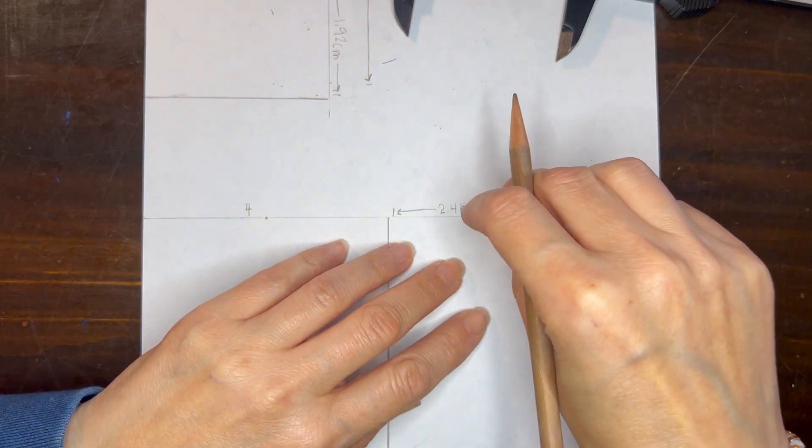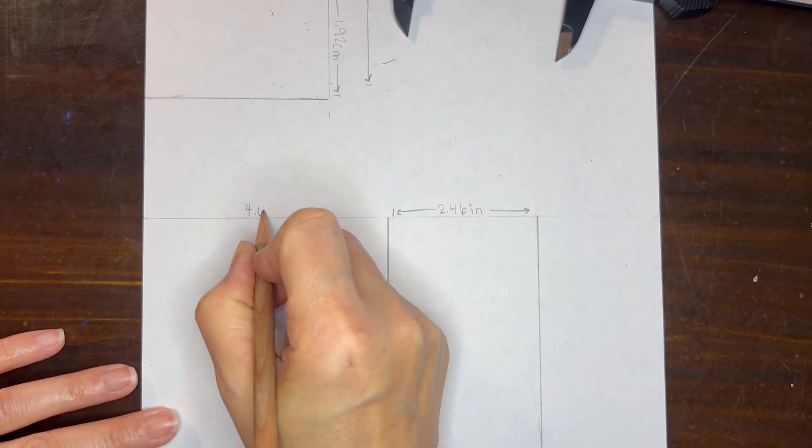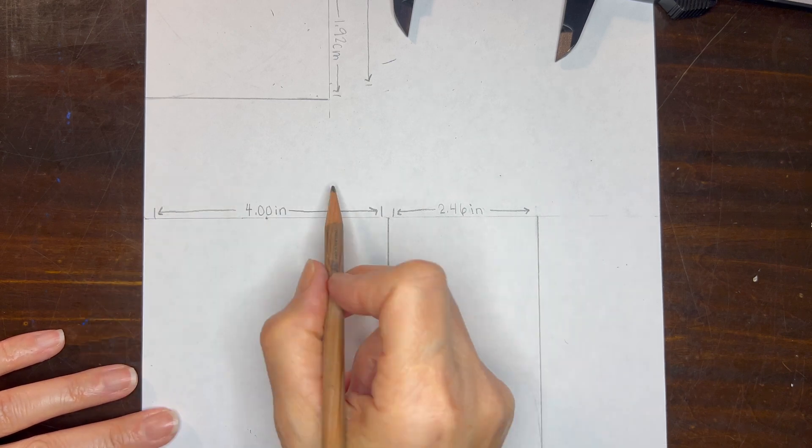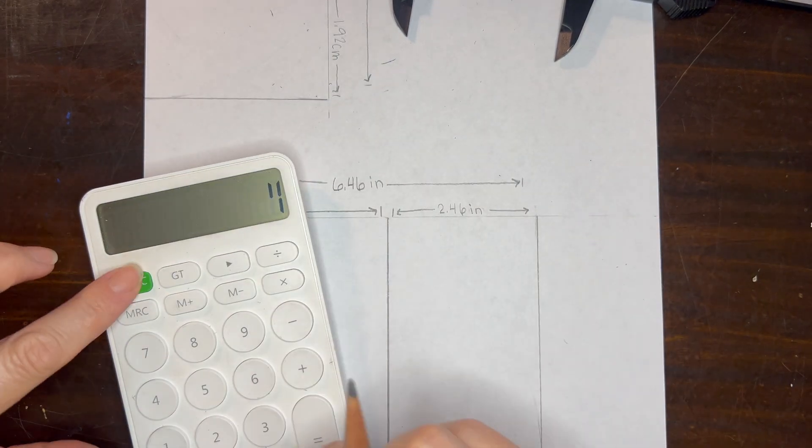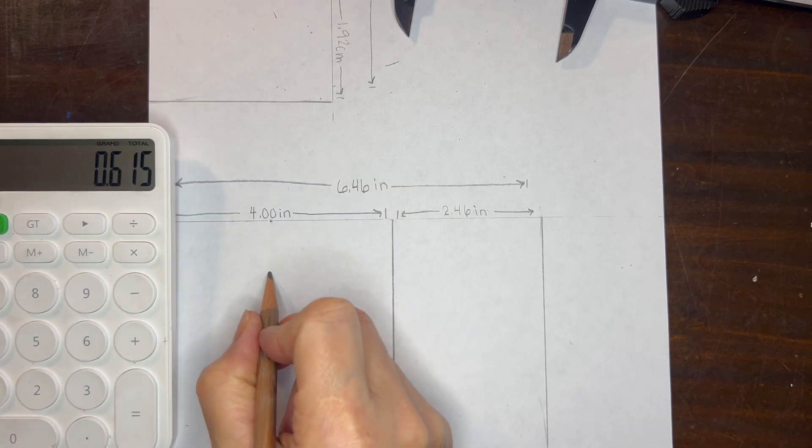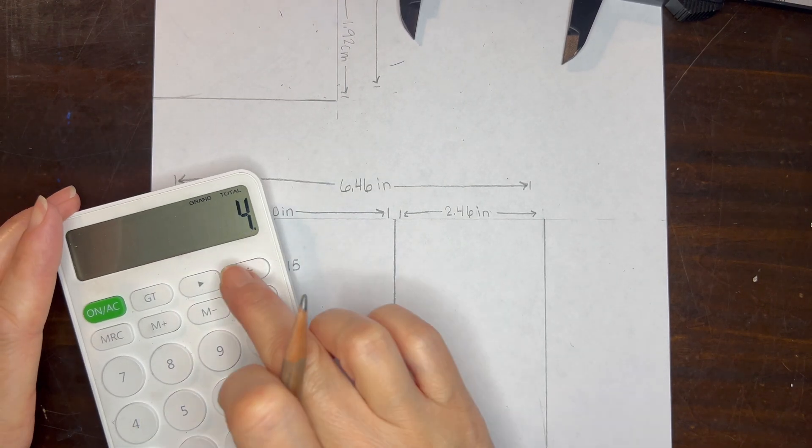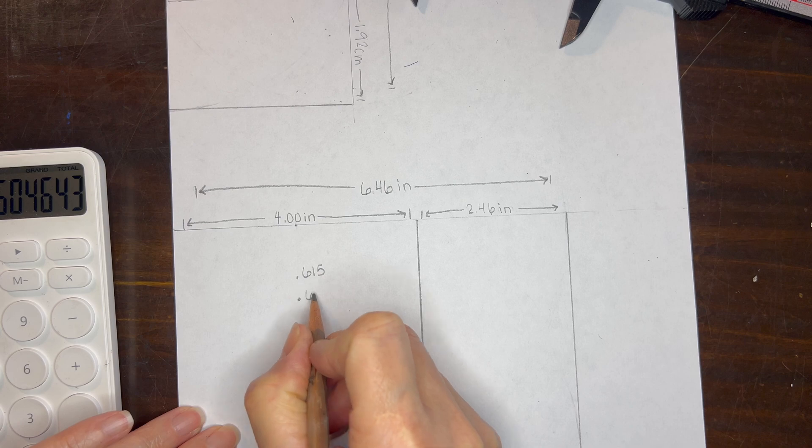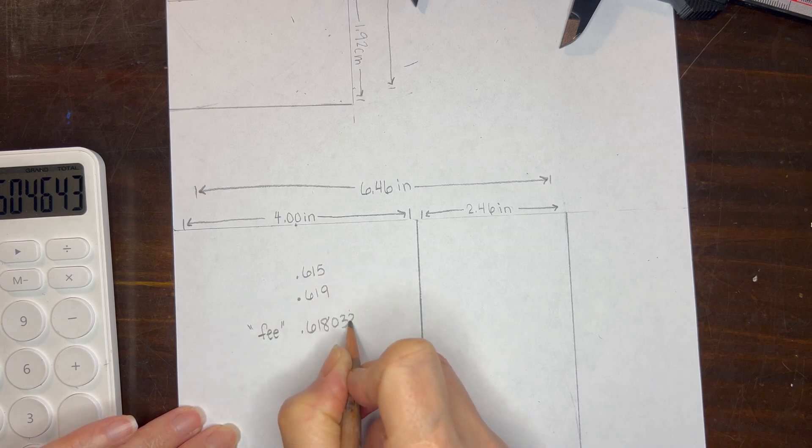So now we're going to take our measurements for our lesser and our larger portion and our larger portion to the whole portion. We're going to do our math and we find that we have 0.615 which is pretty good and 0.619 which is pretty good as well even a little bit better.